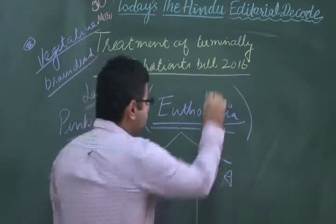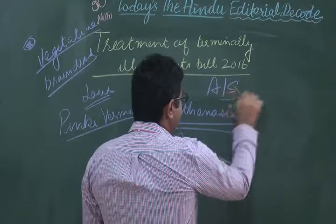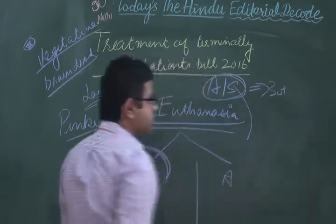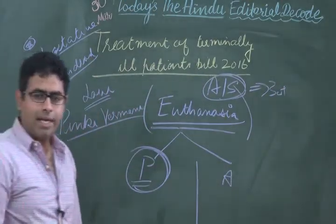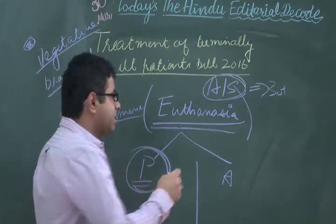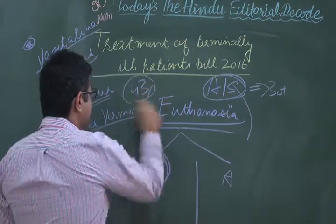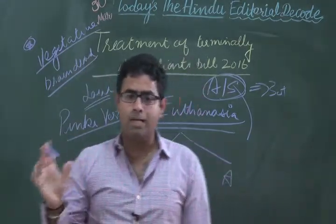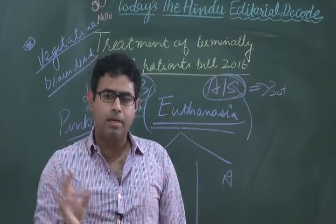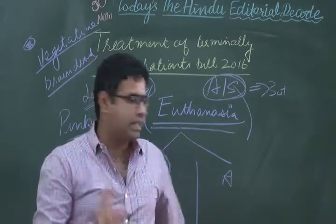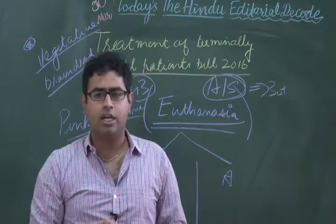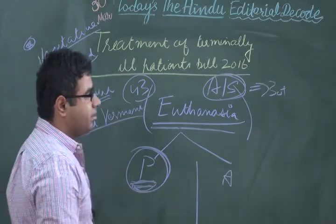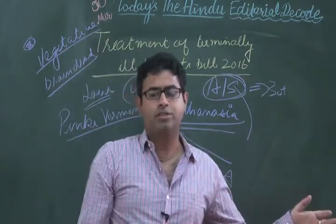Her friend Pinky Virani filed a plea in the court that Aruna Shanbaug should be euthanized, as she had been under a state of coma for over 30 years at the time of the appeal. The Supreme Court passed a verdict that it was not possible to pass a verdict with respect to active euthanasia, but it allowed passive euthanasia.